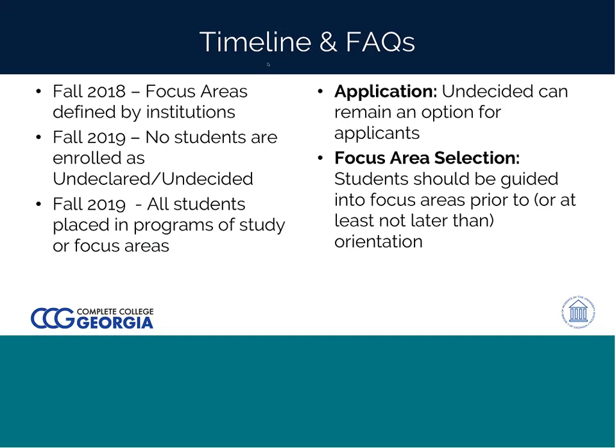We expect by fall 2019 — that is a year from this coming fall — that there will be no students enrolled as undeclared or undecided. They will instead perhaps be exploratory in a focus area. All students will place into a program of study or be placed into a focus area. We're giving this year-long lag because we expect this will be documented in the student information system. We had a conversation just yesterday with the folks at Banner about how this gets done, and we want it to be done in a business practice consistent across all campuses.